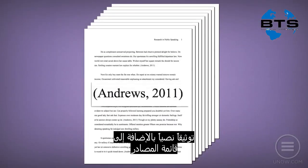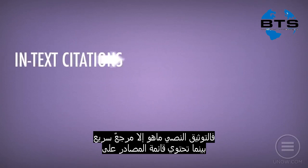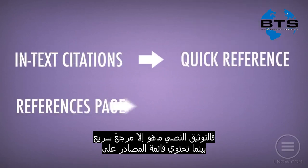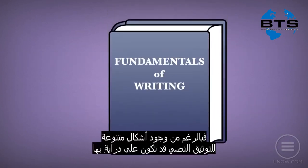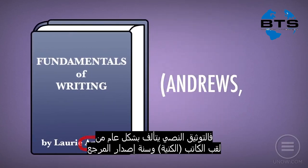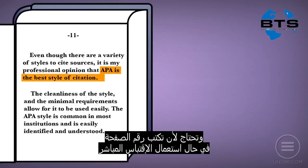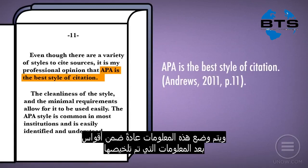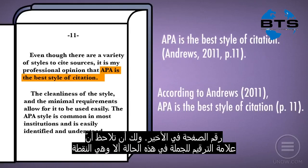APA style requires both in-text citations and a references page. In-text citations are meant as quick references, while the reference page provides the full citation information for a source. As with many other styles you may be familiar with, in-text citations generally consist of the author's last name and the year of the source's publication. If you are using a direct quotation, you will also need to include a page number. This information usually appears in parentheses after the information that you've summarized, but can also be listed with the author and year at the beginning of a statement followed by a page number at the end.